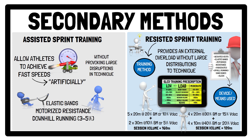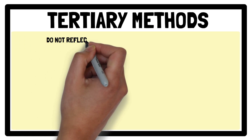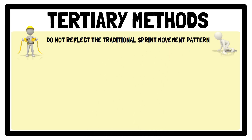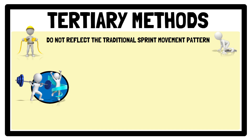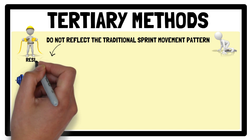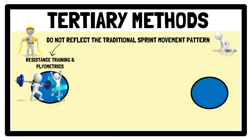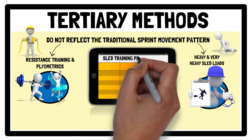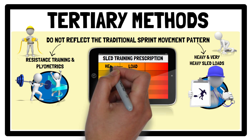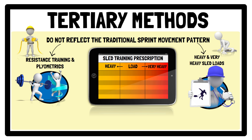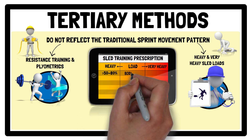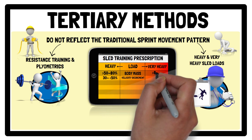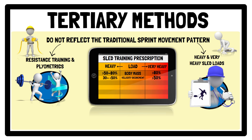Moving on to tertiary methods, which do not reflect the traditional sprint movement pattern, although they do provide specific new muscular stimulus and evoke key adaptations for sprint performance. Means of implementing tertiary training methods include resistance training and plyometrics. Heavy and very heavy sled loads can also be considered tertiary methods, because they disrupt sprint technique and require a very different movement pattern to execute compared to unresisted sprints. Heavy loads are considered between 50–80% of body mass or between 30–50% of velocity decrement, and very heavy loads are considered above 80% of body mass or greater than 50% of velocity decrement.